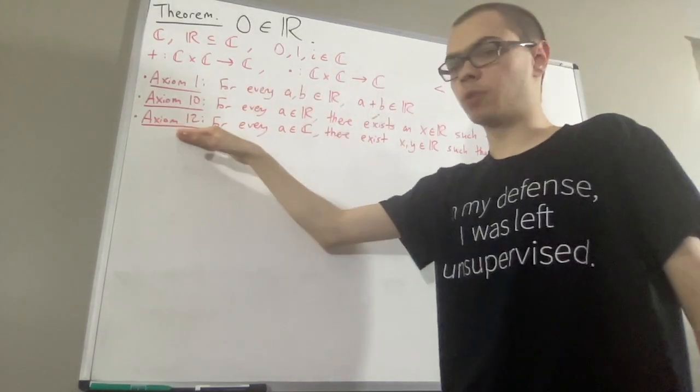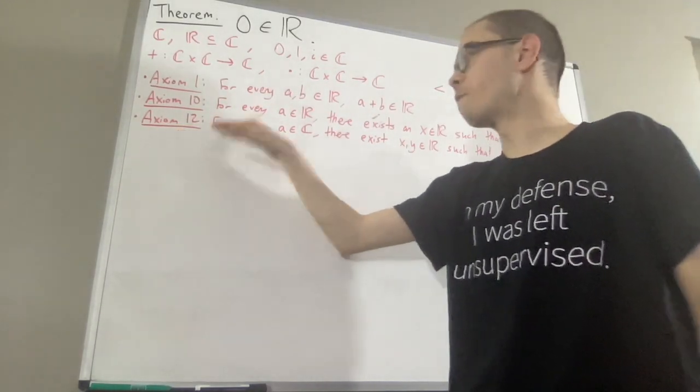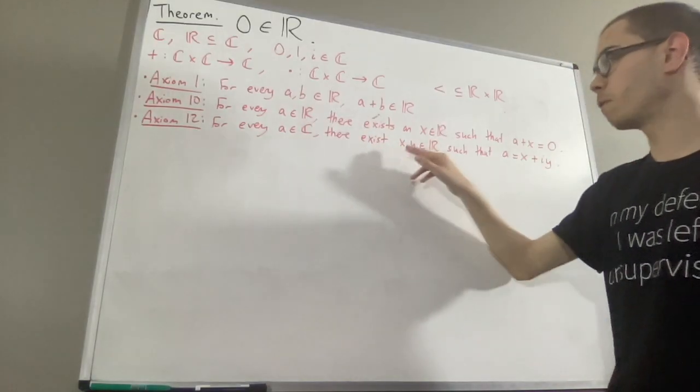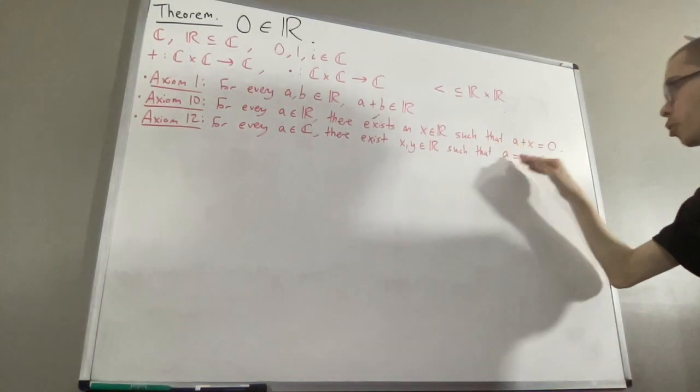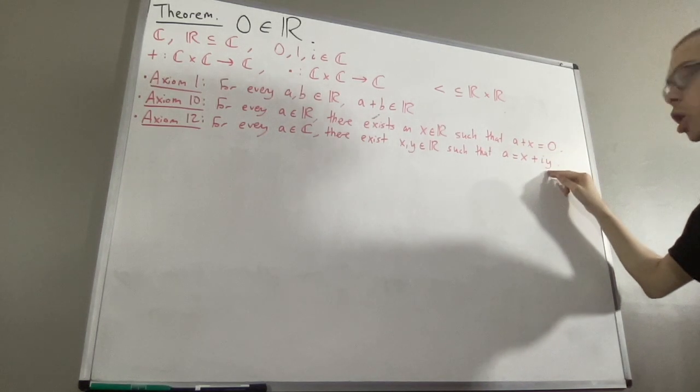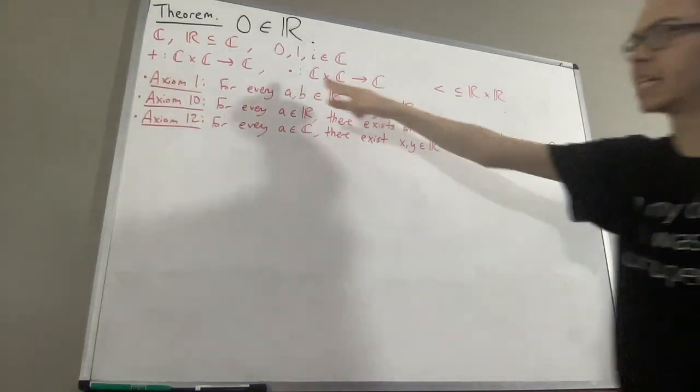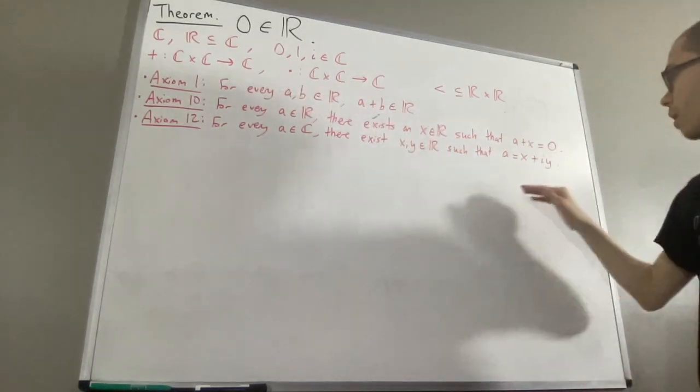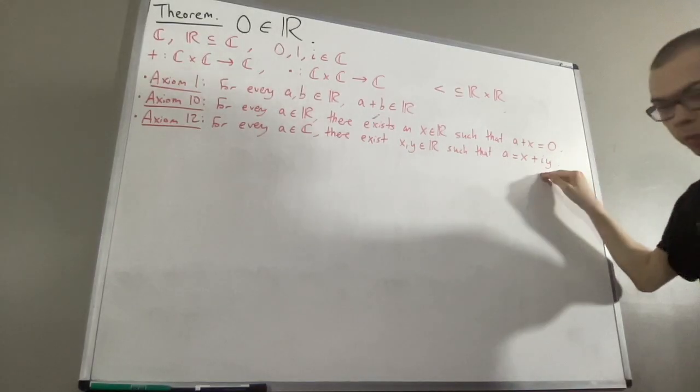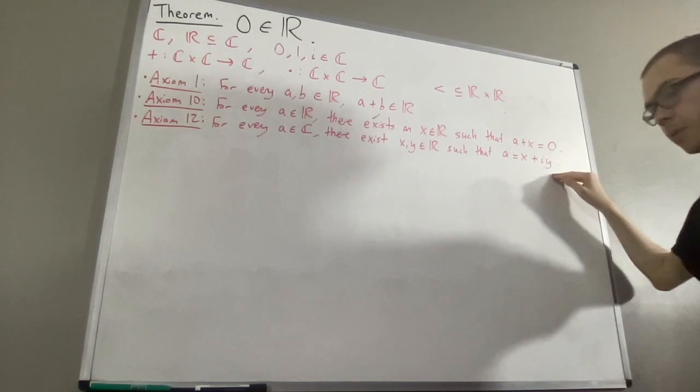And we're going to be using axiom 12, which tells us, for every complex number A, there exists a pair of real numbers X and Y such that A is equal to X plus IY. And IY is understood to mean I times Y. And we use the same convention as usual, multiplication takes precedence over addition.